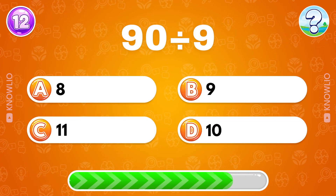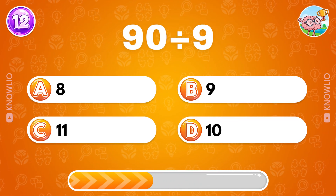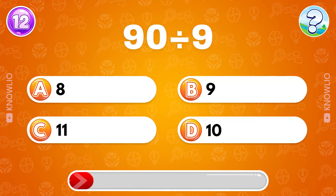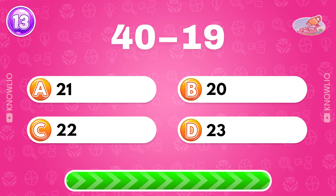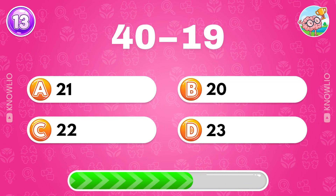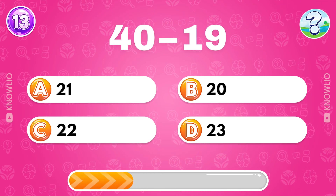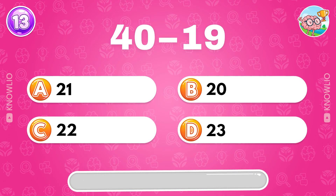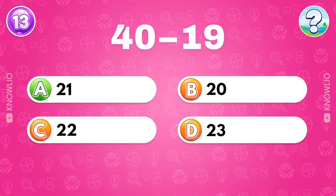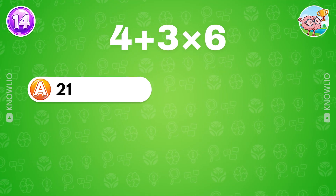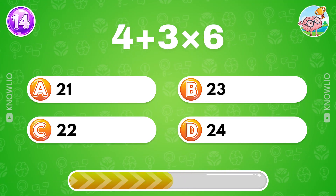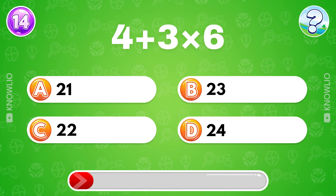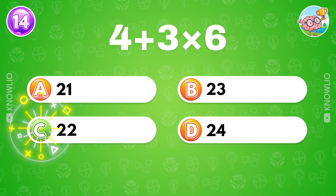90 divided by 9? Answer D, 10. What's the result of 40 minus 19? Hard one: 4 plus 3 multiplied by 6? Answer C, 22.